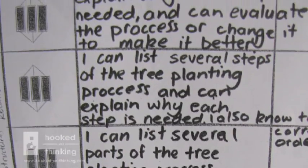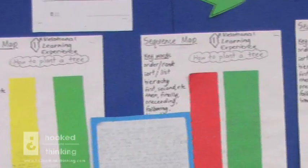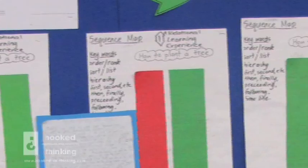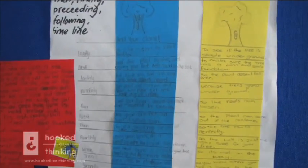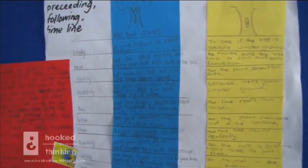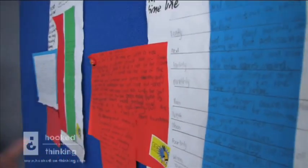Then I gave them the template for what they would be using and then I gave them one coloured strip of paper and told them that they had to write what they did. So that was the 'how to plant a tree' and so they started off using the key words and just doing a basic sequence.